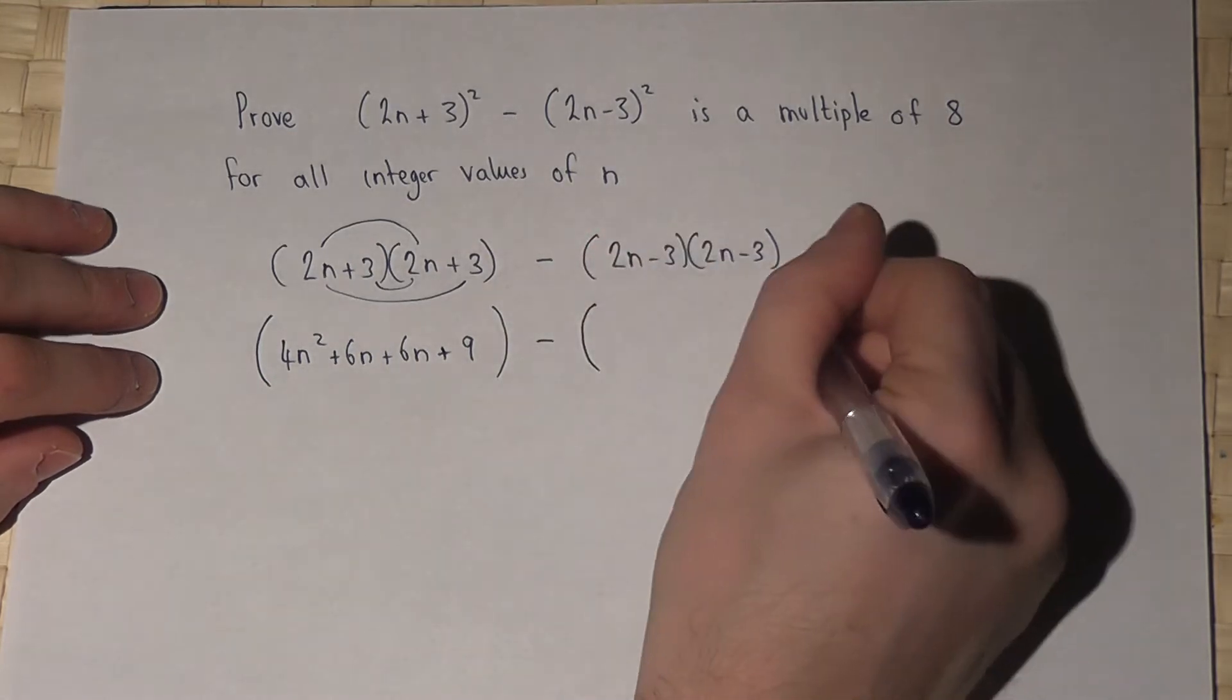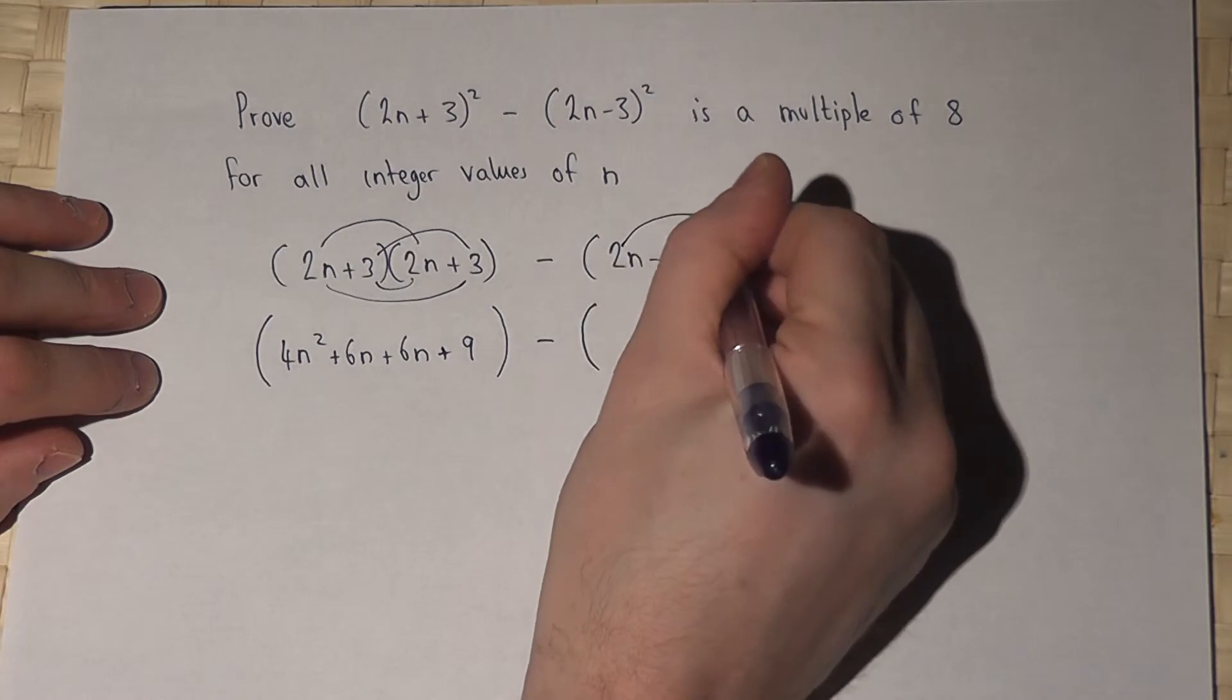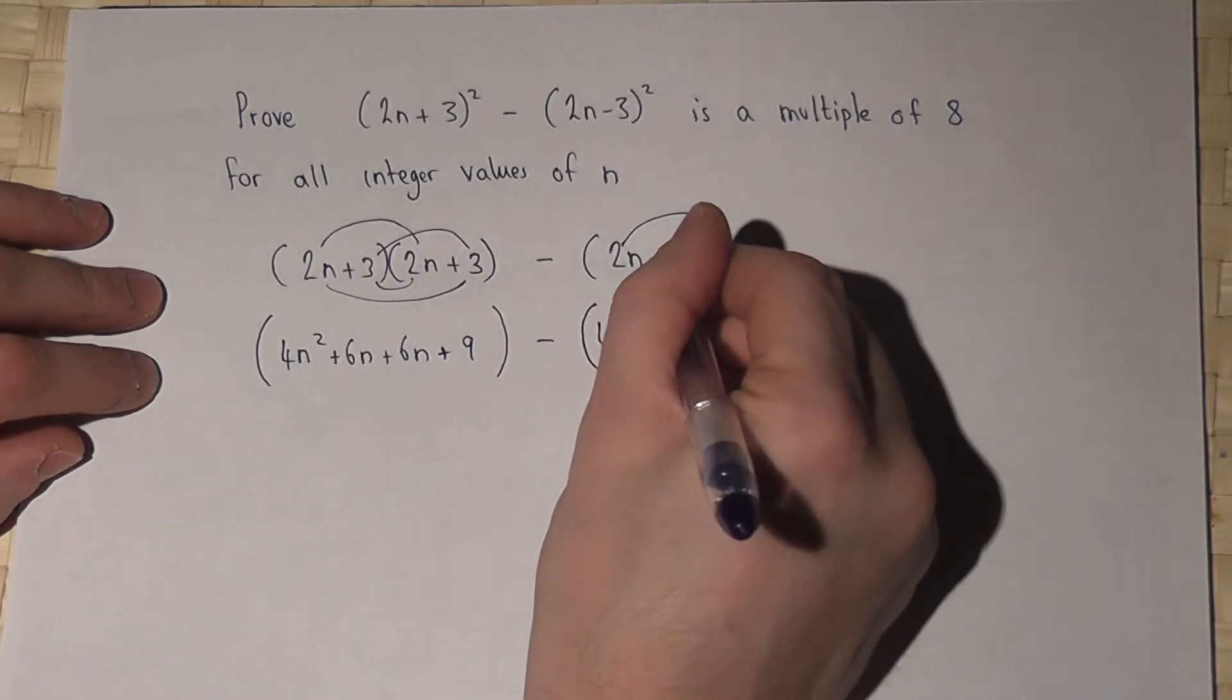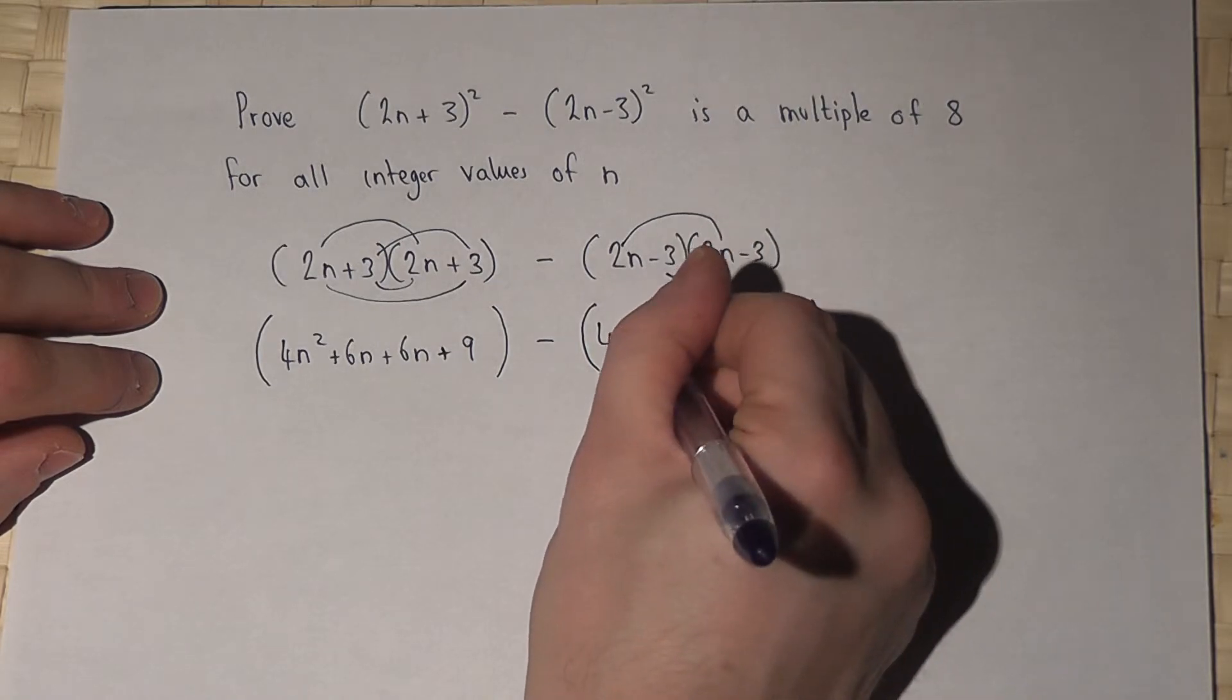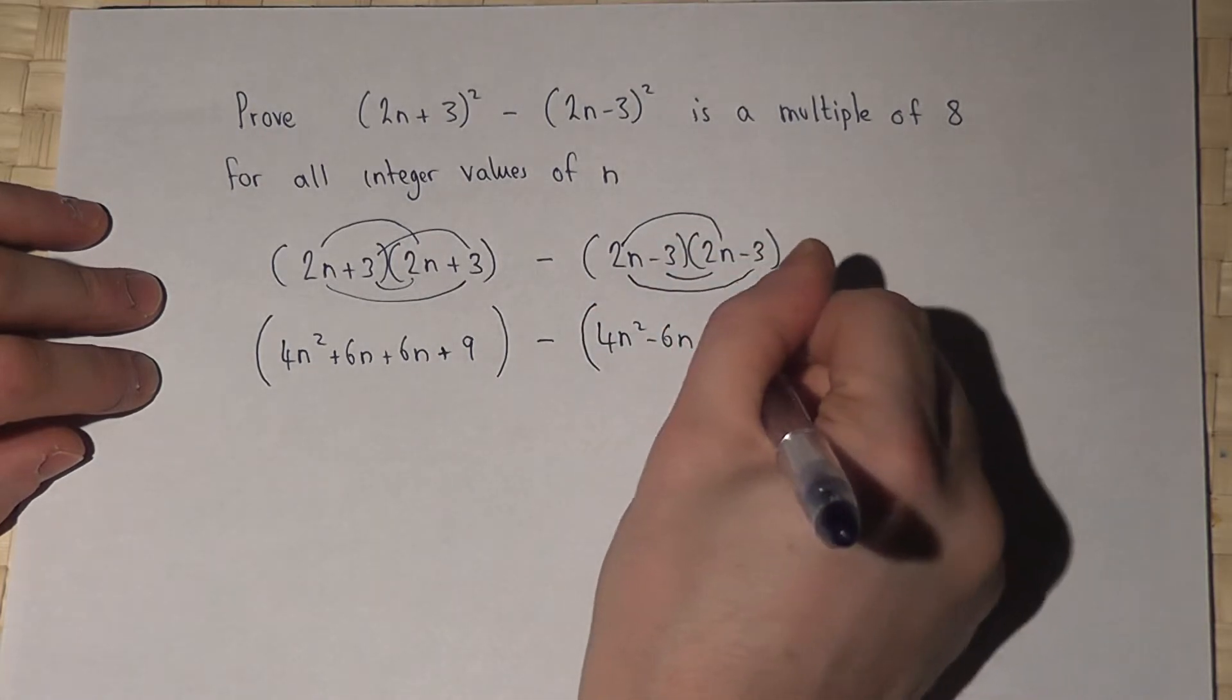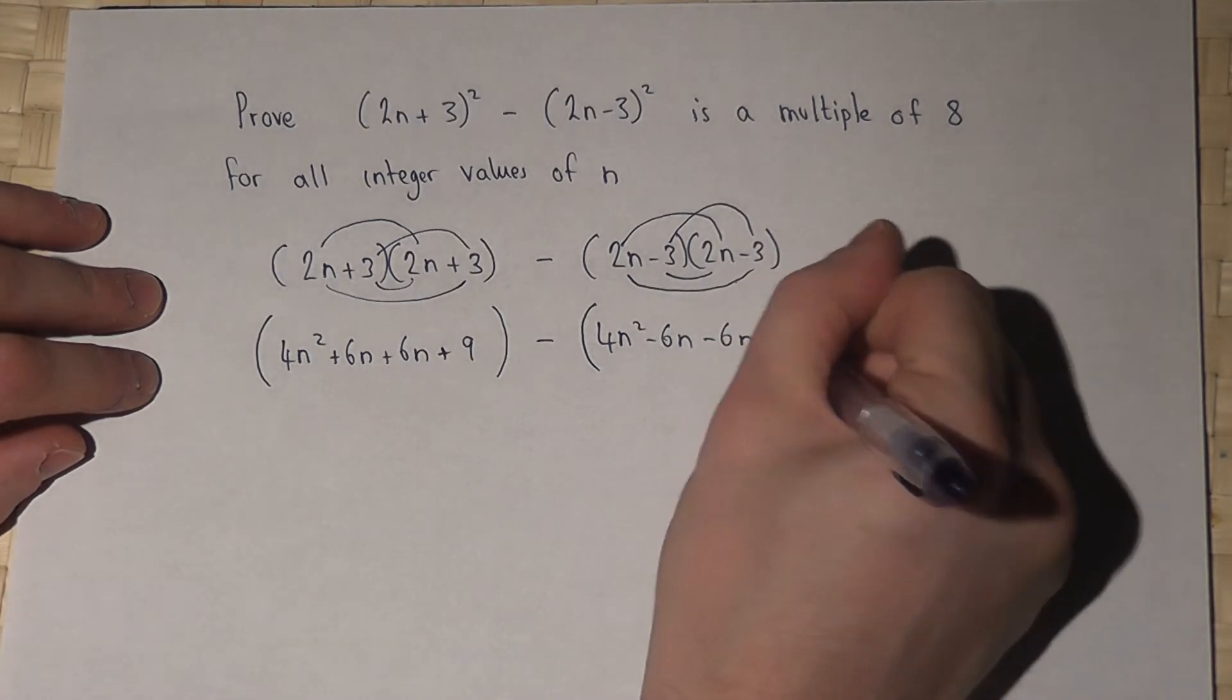Now the second pair of brackets, 2n times 2n is also 4n squared, I've got a minus 3 times 2n, which is minus 6n, another minus 6n, and then minus 3 times minus 3, which is plus 9.